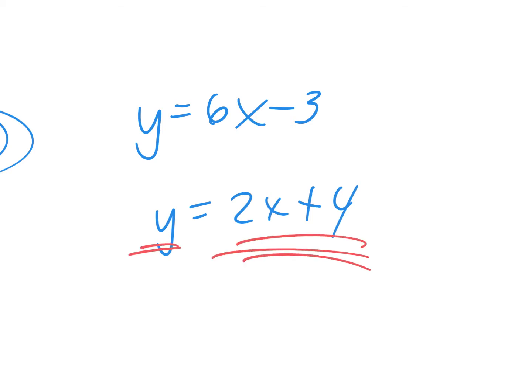All right, what if it's a little more complicated? y equals 6x minus 3, and y equals 2x plus 4. Same deal. I've got y equals 2x plus 4. So wherever I see a y, I could put a 2x plus 4. I see a y right there. I can put 2x plus 4 right there. Everybody solve that one, please.